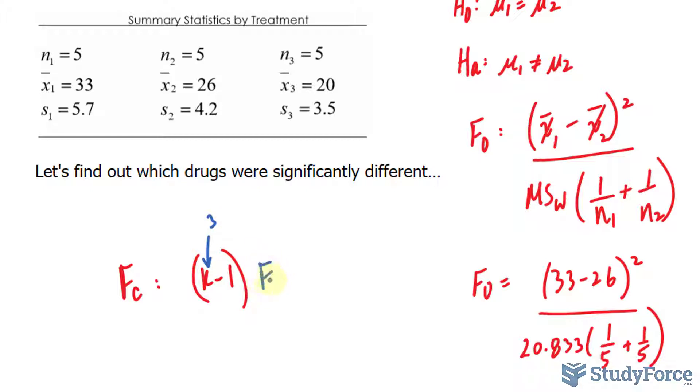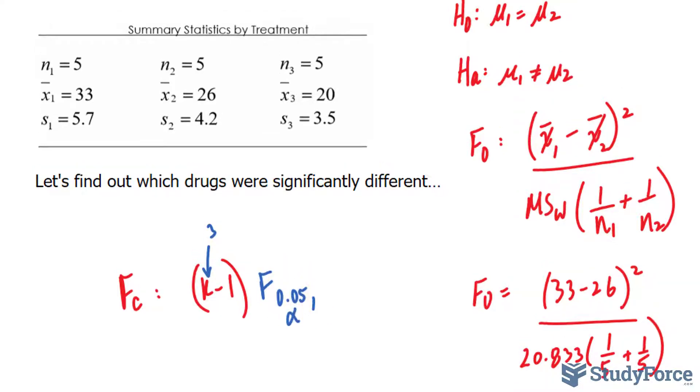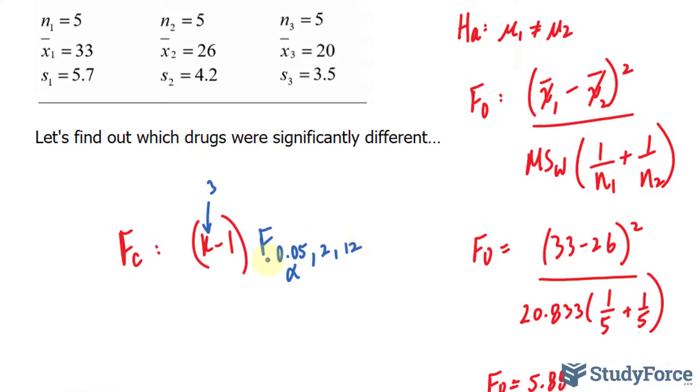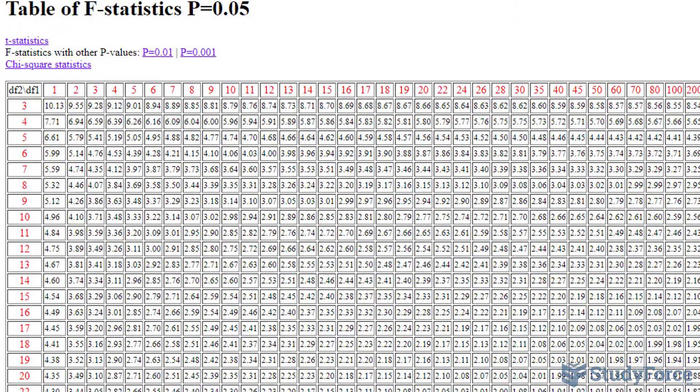and we multiply it to the F critical value at 0.05 significance, the degrees of freedom between, which is 2, and within, which is 12.